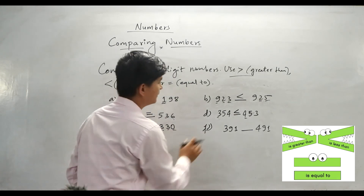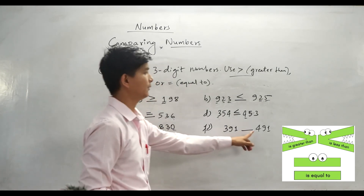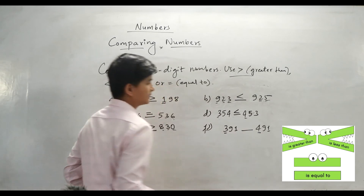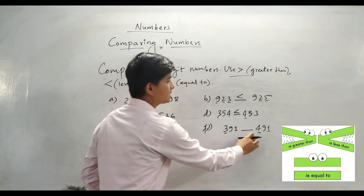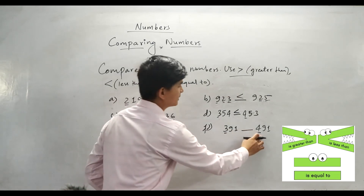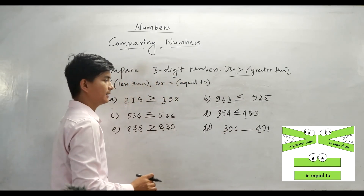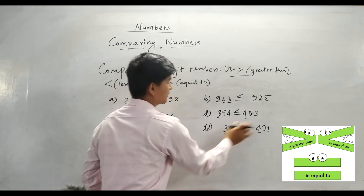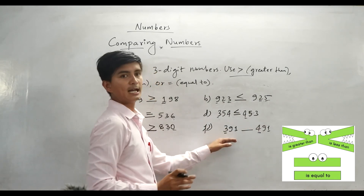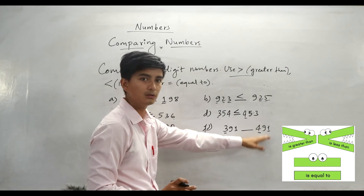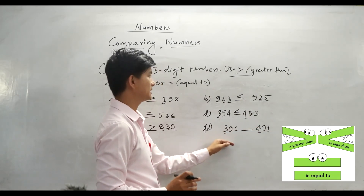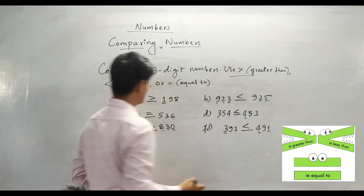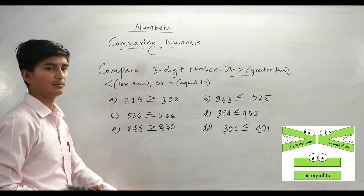Next, 391 versus 491. Look at the hundreds place: 3 versus 4. Four is greater, so 3 is less than 4. Therefore 391 is less than 491. We put the less than symbol. In this way you can compare any numbers.